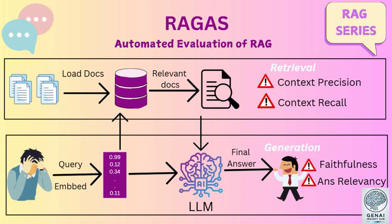One challenge is ensuring that RGAS can keep up with the rapid pace of AI development. New models and architectures are emerging all the time, and we need to make sure RGAS can adapt to evaluate these new systems effectively. Another area for improvement is context relevance — there's still work to be done to make sure AI is consistently identifying and using the most relevant information from its sources. We need to keep refining these evaluation methods as AI technology continues to evolve. And while RGAS can provide valuable insights, it doesn't offer a complete picture — we still need human judgment and critical thinking to fully evaluate AI systems and their impact.